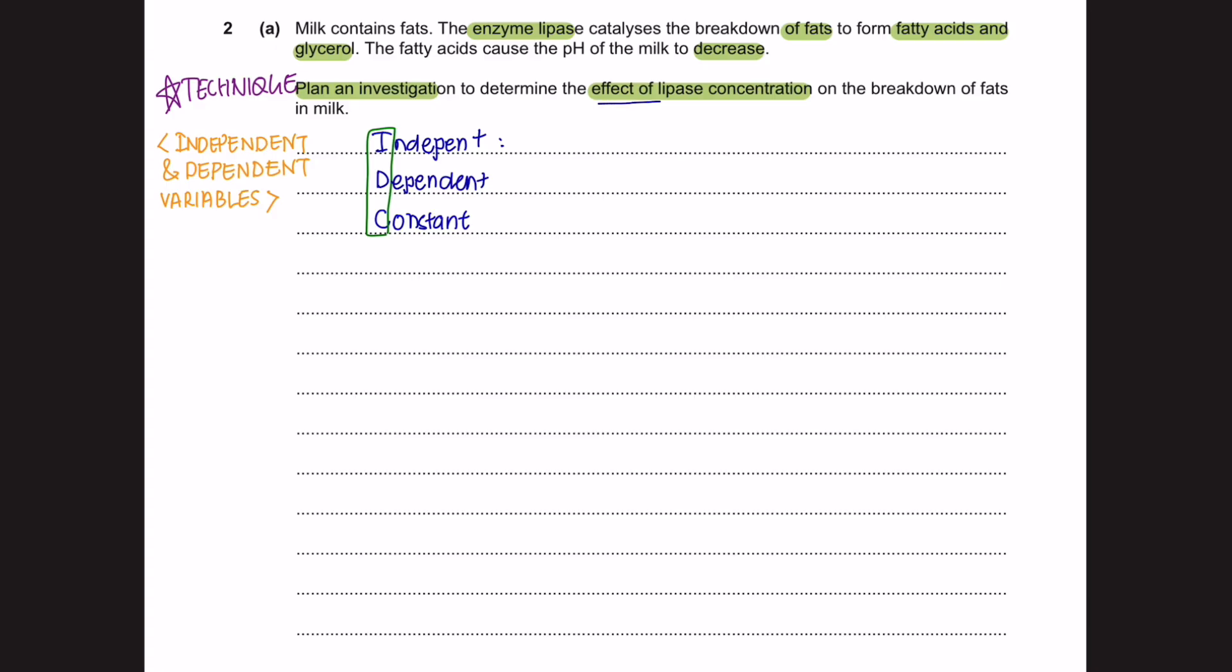to help me remember the variables that I need to look for. The independent variable here is what is being changed. And what is being changed is the lipase concentration. And next is your dependent variable. Dependent variable is what is being measured. We are looking to measure the breakdown of fats in milk. And it mentions here that when the fat breaks down, it will form fatty acid. And this fatty acid that is being formed will cause the pH to decrease.